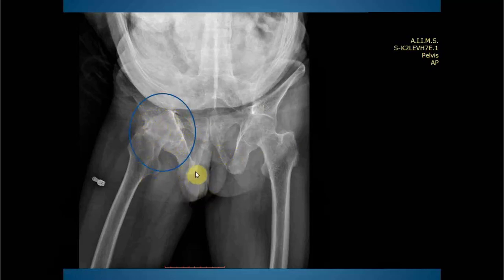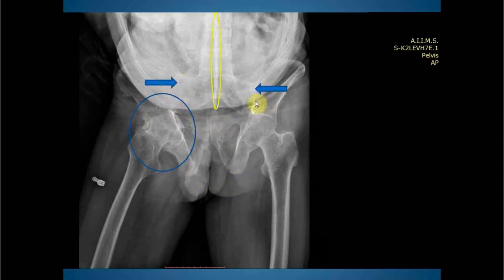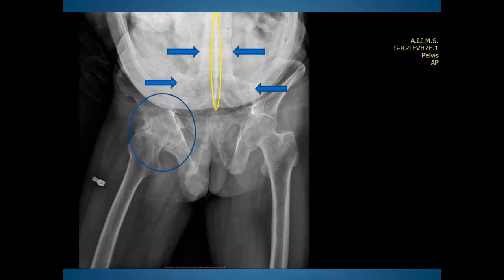There is fluffy periosteal ossification involving the bilateral ischial tuberosity, known as the ischial ring. There is ankylosis of bilateral sacroiliac joints. There is ossification of the interspinous and supraspinous ligaments giving an appearance of the dagger sign, fusion of multiple vertebral bodies due to ossification of the annulus fibrosus forming syndesmophytes, ossification of the ligamentum flavum, and fusion of the facet joints.